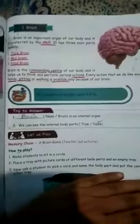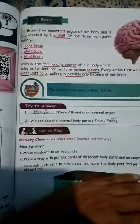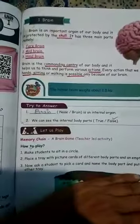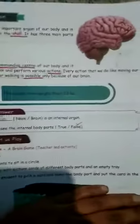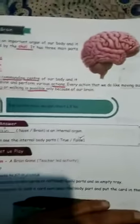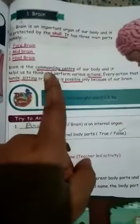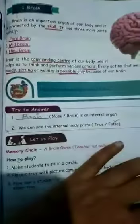Now we are going to look into the brain. The brain is a very important part of our body. This is a brain structure. There are three parts of the brain: forebrain, midbrain, and hindbrain. The brain is the commanding center of our body.